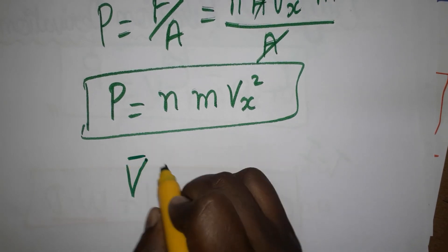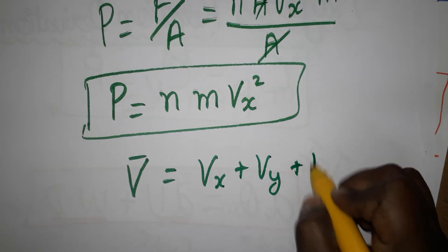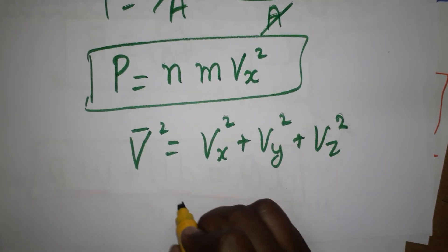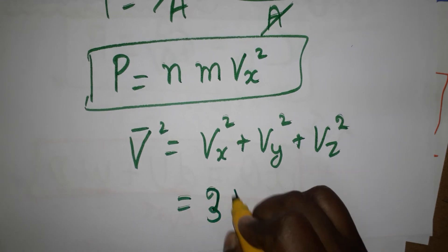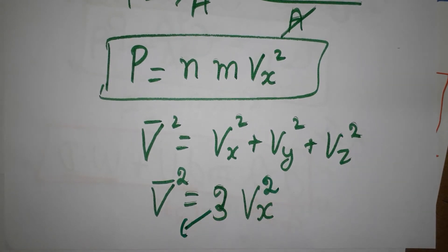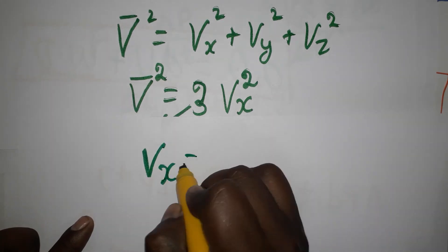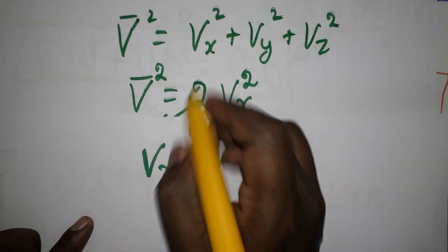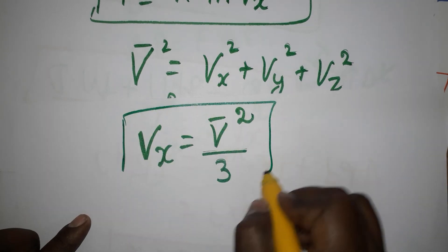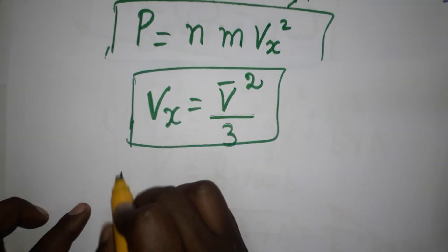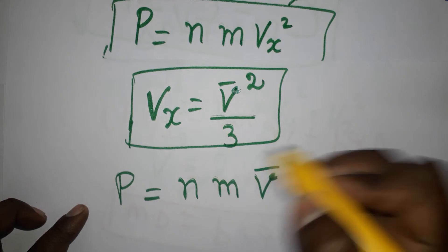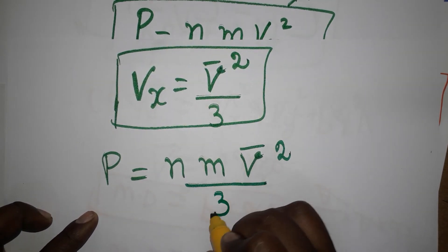We have only x-axis velocity in our pressure equation. The resultant average velocity is v² = vx² + vy² + vz². Since all three velocity components are equal, 3vx² = v², so vx² = v²/3. Substituting: pressure equals n × m × v²/3, where v is the overall average velocity.